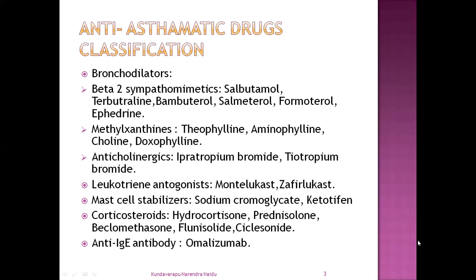And corticosteroids. Corticosteroids are hydrocortisone, prednisolone, beclomethasone, flunisolide, and ciclesonide. These are the drugs of corticosteroids used in the anti-asthmatic classification. And the anti-IgE antibody drug — the only drug used as an anti-asthmatic drug in this class is omalizumab.